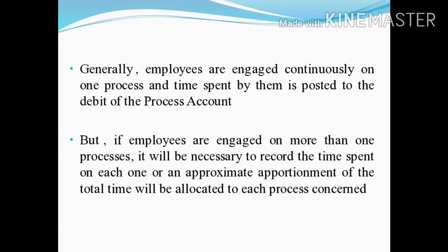Generally, in process costing, the cost of direct labour is a very small part. The direct labour element becomes smaller and smaller, while the overhead element increases with the introduction of more and more automatic machinery. The recording and allocating of time spent on production is relatively easy as compared with job costing.